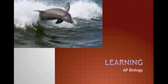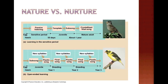Learning is what happens whenever there's a behavior that's changed based on the experience gained in an individual's lifetime. There are many different types of learning. Remember that one of the big debates that used to occur was whether behavior was nature or nurture, and scientists typically say now that for most behaviors there's some combination of the two.